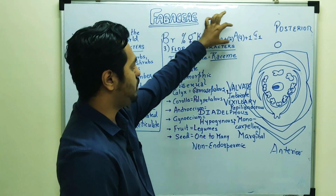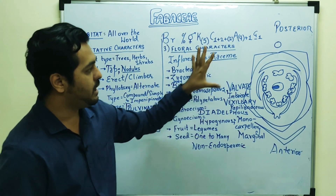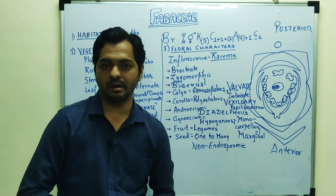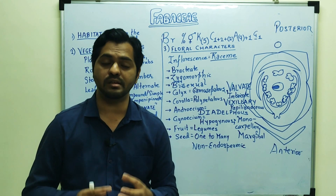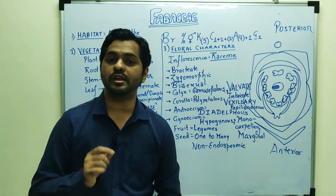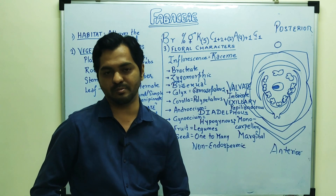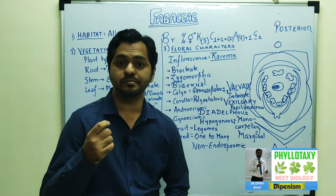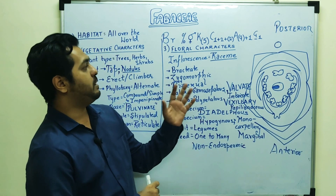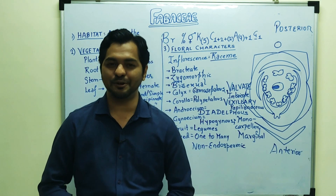So we have detailed habitat, vegetative, and floral characters with the floral formula. Examples of this family include soya bean, groundnut, and medicinal plants whose roots are important in the treatment of cold and cough. Fodder crops like Sesbania or Vicia faba are also important members of this family. In the next videos, the families Solanaceae and Liliaceae will be discussed — stay tuned. That's all from Dipenism.